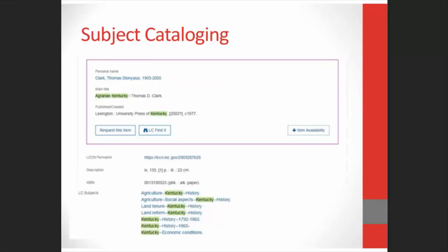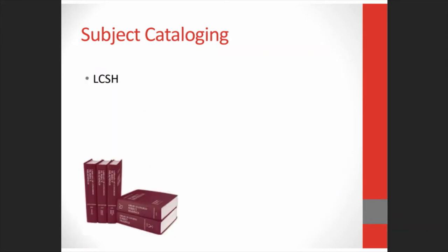Here's how subject headings might look in a record in your catalog — this is actually a record from LC's catalog for the book Agrarian Kentucky. The first term on the left is the main topic. You can include subdivisions under the main topic, which lets you give further information about the subject. Common subdivisions are geographical, like Kentucky or United States; topical, like history; or they may have to do with time periods, such as 1865 on. Sometimes it's necessary to create your own subject headings, but for the most part there are good ones out there already. The most widely used subject heading list is the Library of Congress Subject Headings, or LCSH. These used to be published in a set of big red books but can now be downloaded in PDFs for free from the Library of Congress's website, and it has been maintained by LC since 1898.